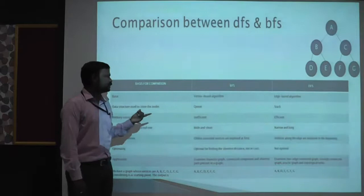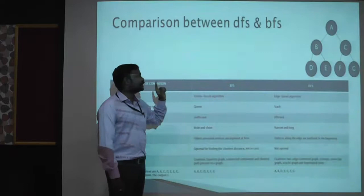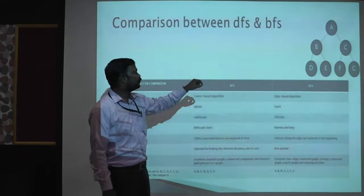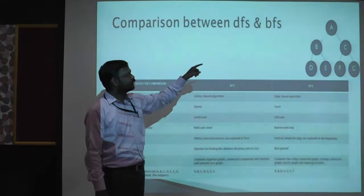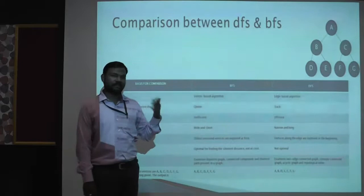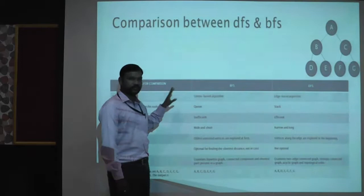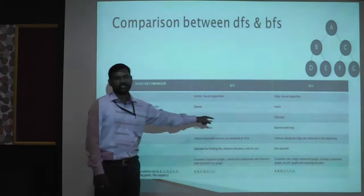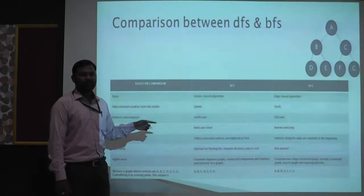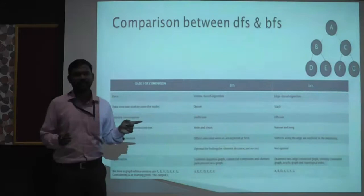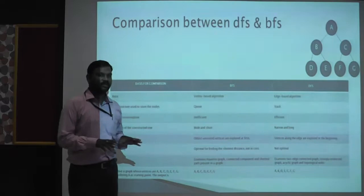These are the comparisons between depth-first search and breadth-first search. In breadth-first search, it proceeds vertex-wise level by level. In depth-first search, it will iterate from A and process to B, then go to D. In breadth-first search, the number of nodes gets increased after each iteration, but in depth-first search, as the iteration increases, the number of nodes being held never increases — it remains constant throughout. Breadth-first search uses a queue, whereas depth-first search uses a stack for implementation. Breadth-first search is wide and short, whereas depth-first search is narrow and long.